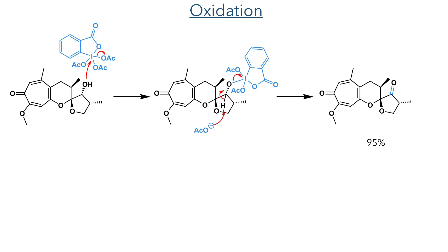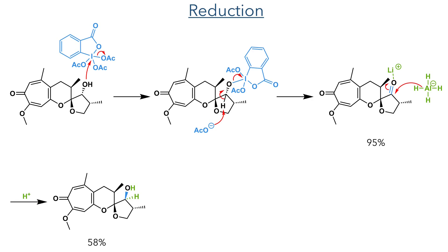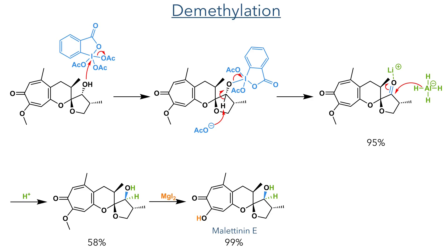In order to synthesise malatinin E, they needed to invert the stereochemistry of the secondary hydroxyl group. They initially tried a Mitsunobu reaction, however this was unsuccessful, so instead they used an oxidation-reduction strategy. The compound was first oxidised using Dess-Martin periodinane, which is attacked by the hydroxyl group, eliminating acetate which then acts as a base to deprotonate the molecule and complete the formation of the ketone. This was then reduced using LiAlH4, which attacks from the less sterically hindered bottom face of the ring, forming the new alcohol in a 58% yield. Magnesium iodide was then used to demethylate the compound, completing the synthesis of malatinin E in 99% yield.